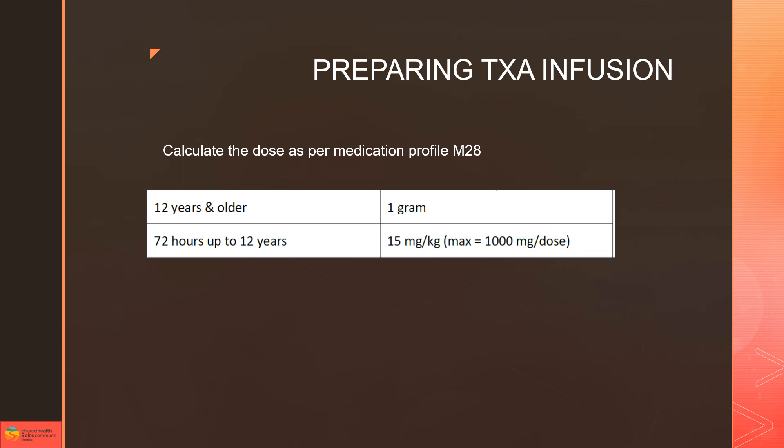We're going to calculate the dose for our medications as per M28. If they're over 12 years of age we give them one gram which is 10 mls. If they're less than 12 and more than 72 hours we're going to do a weight-based dose. The concentration of TXA is 500 milligrams per 5 mls, or 100 milligrams per ml.